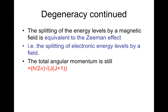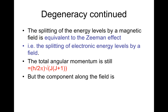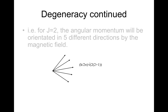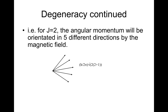The total angular momentum is still h over 2π times the square root of j(j+1), but the component along the field is equal to h over 2π times mj. For j equals 2, the angular momentum will be oriented in 5 different directions by the magnetic field.